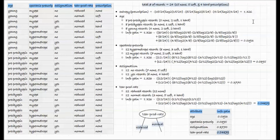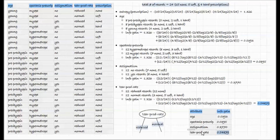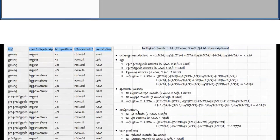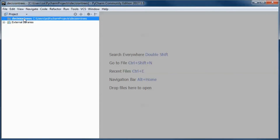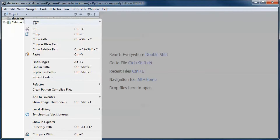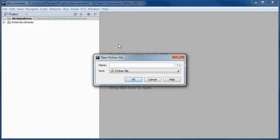We do the calculation for each one of the attributes — for age and the other three — and it turns out that this attribute has the highest information gain, so we split on it.